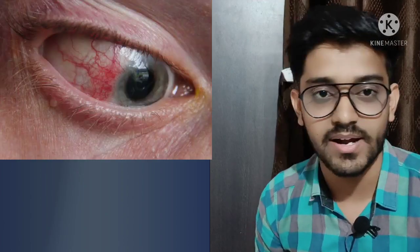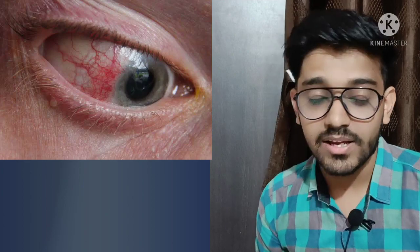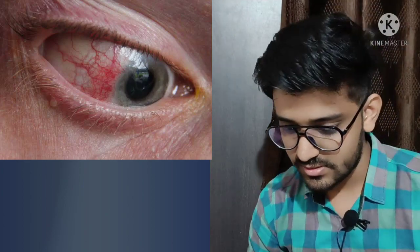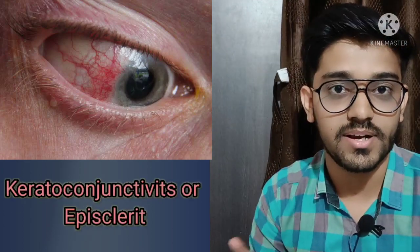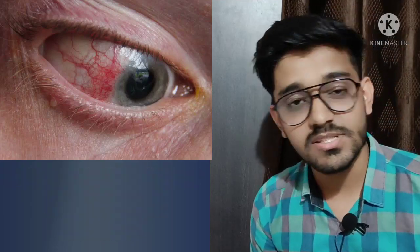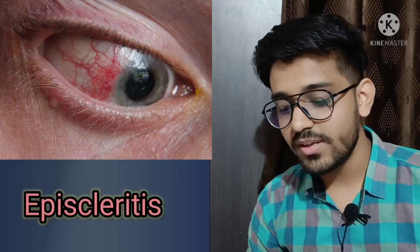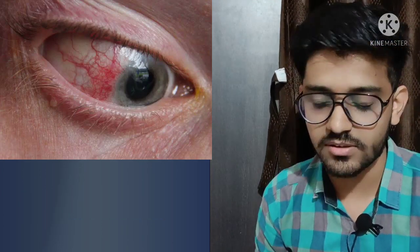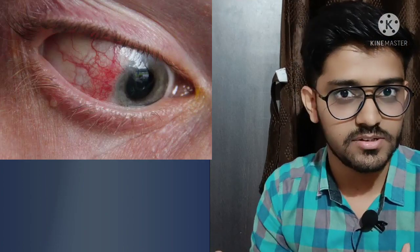These were the images posted with the question. The first image shows a red eye. Red eye involvement in rheumatoid arthritis can be either keratoconjunctivitis or episcleritis. This image is of episcleritis, not conjunctivitis. To clinically differentiate — if a patient presents with a red eye, how do you tell whether it is episcleritis or conjunctivitis?